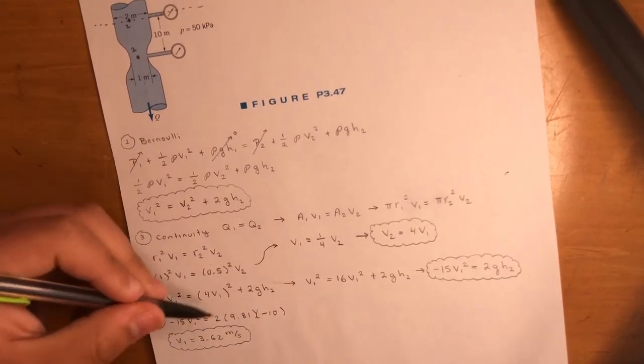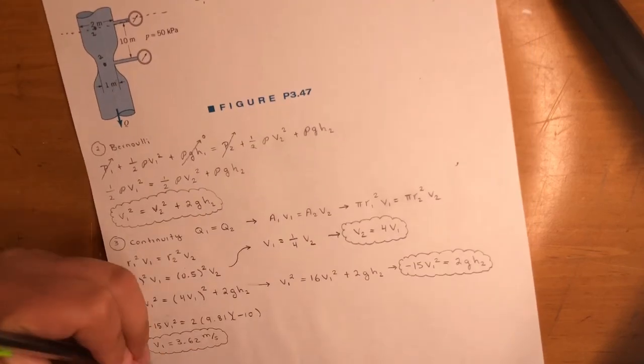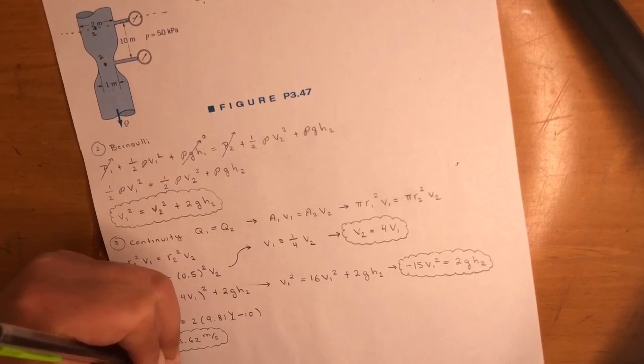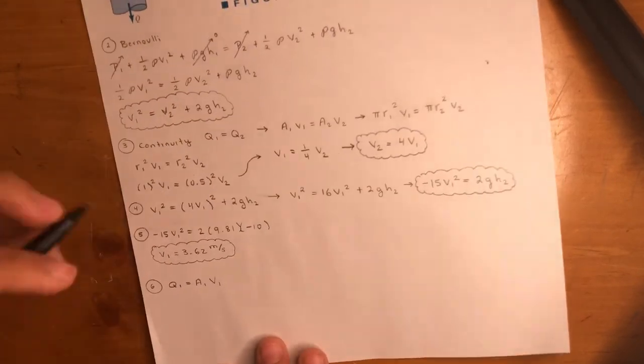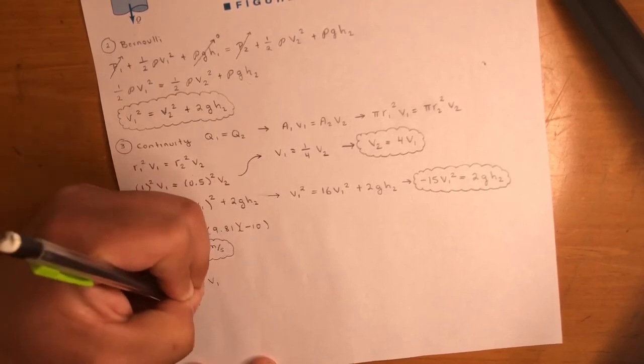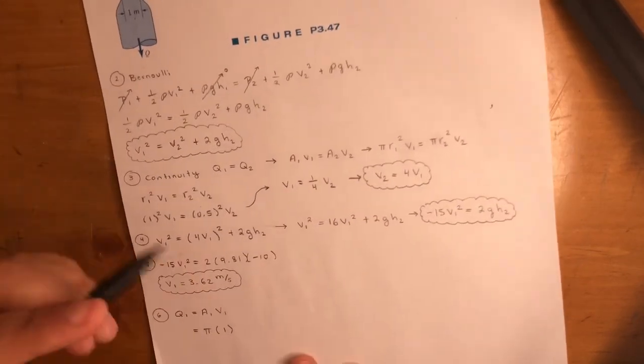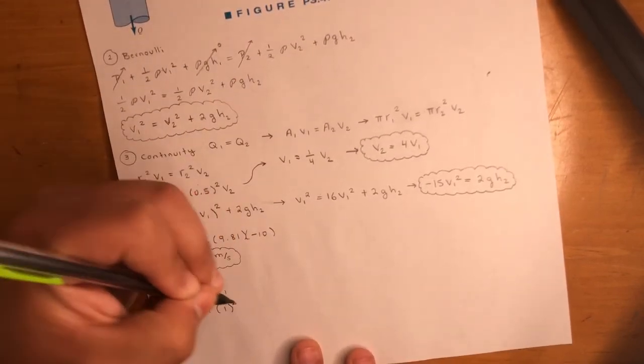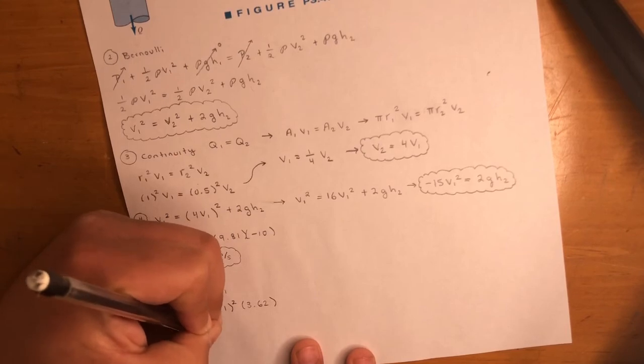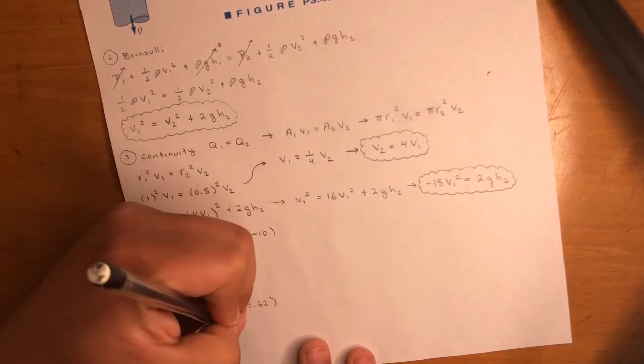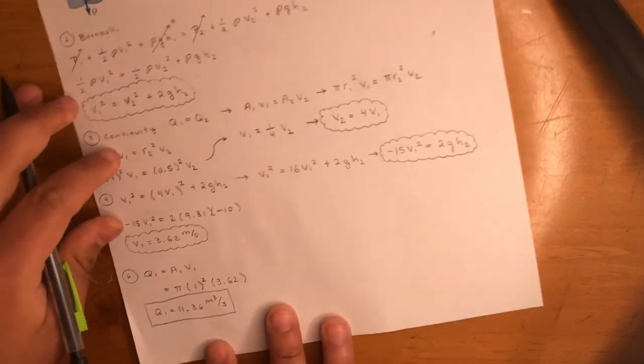Now we need the flow rate, so we can use this V1, plug it into Q equals A V. Q is equal to Q1 is equal to A1 V1. Finally, the last step: Q1 is equal to A1 V1. The area at point one - that is equal to pi r squared. Pi, radius is one. Again, radius is one - you're not using diameter - one times 3.62. So that should be Q1 is equal to 11.36 meters cubed per second. So that's the answer. Let me move it up just in case you can't see it, but that's the answer right there.